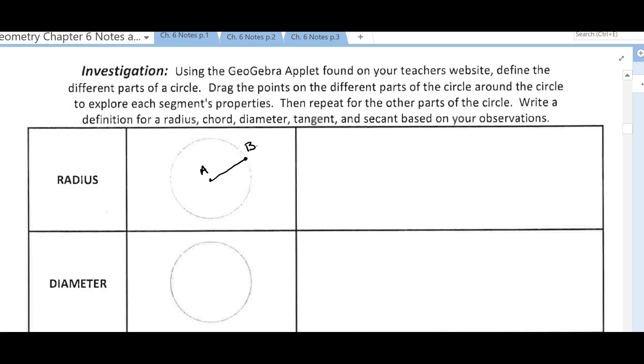Notice that a radius is a segment. So segment AB is a radius.